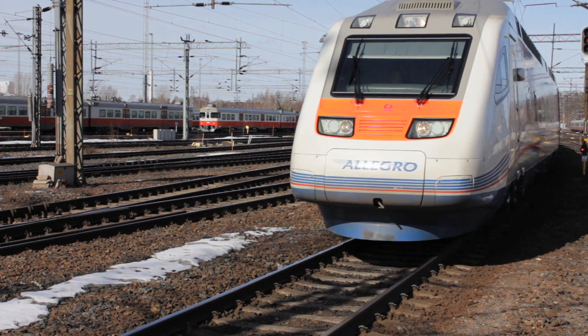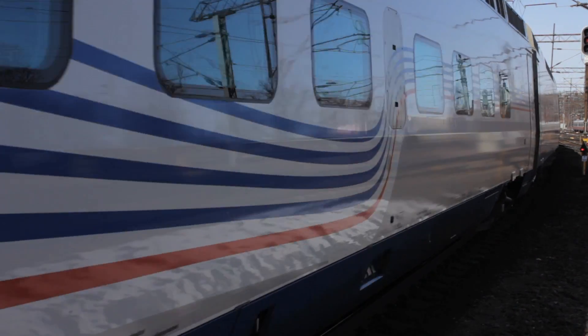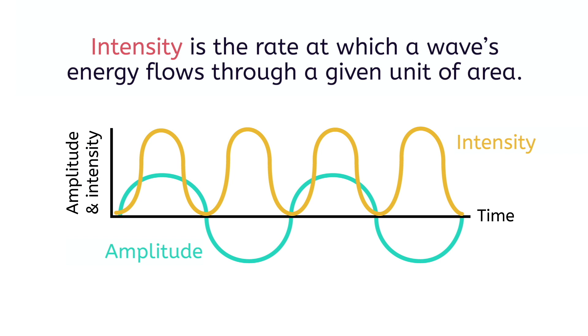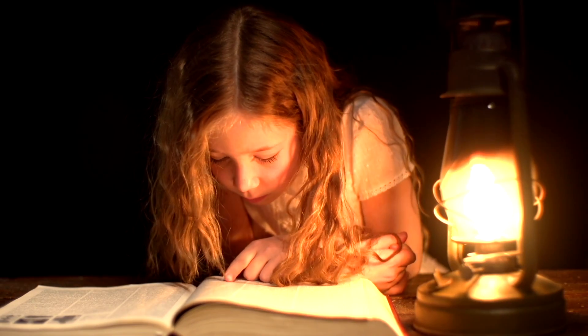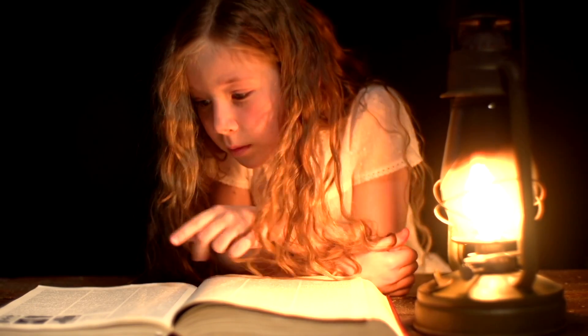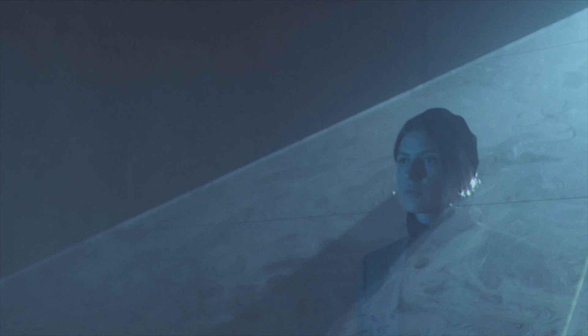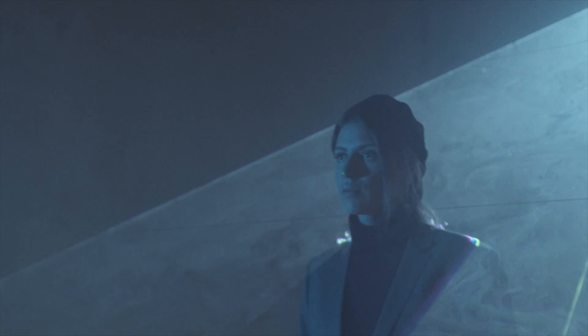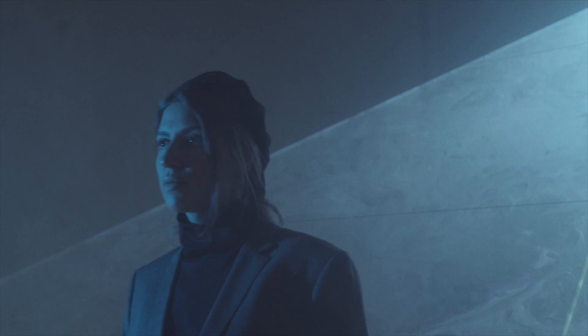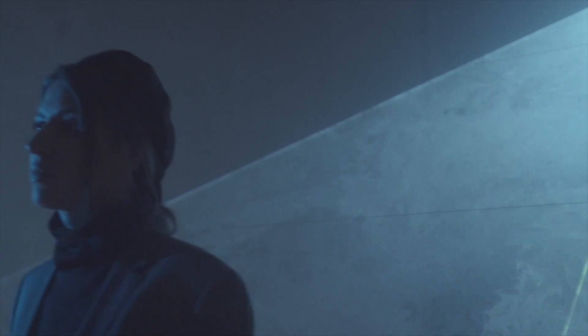The final stop on this brain train is intensity. Intensity is the rate at which a wave's energy flows through a given unit of area. It's helpful to think of intensity as brightness. If you're a nighttime reader, like I am, then you know that to find whodunit, you have to sit near a lamp to see. As you move further away from the lamp, the darker the area around you gets. The light bulb is still emitting the same energy every second, but because you're farther away from it, the energy spreads over a greater area. Therefore, you receive less energy and perceive the light as less bright.